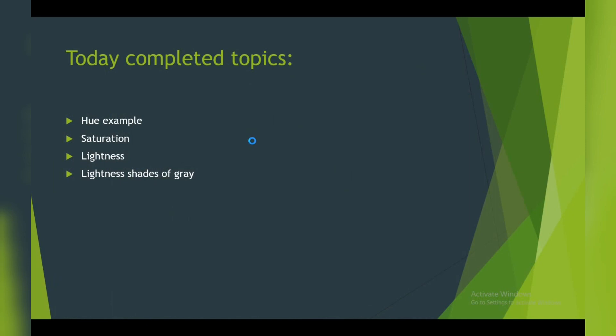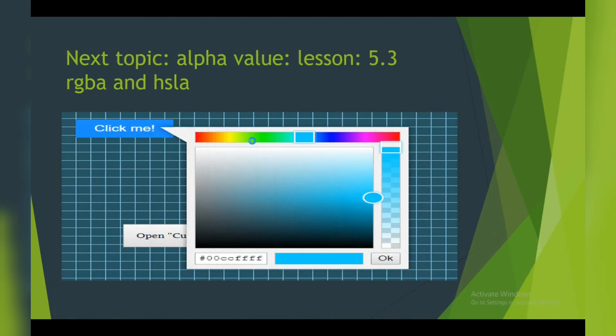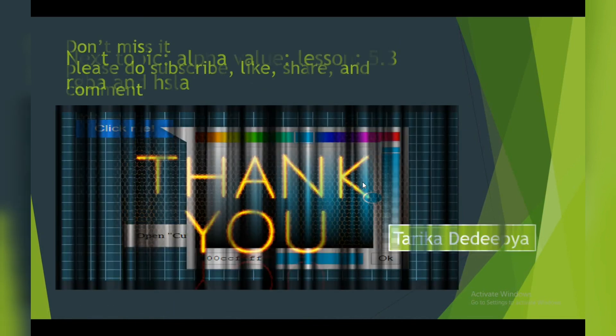After my notepad explanation, our next topic is about alpha values. That is lesson number 5.3. This is a small short example I will give you: what is RGBA and HSLA. So don't miss it.